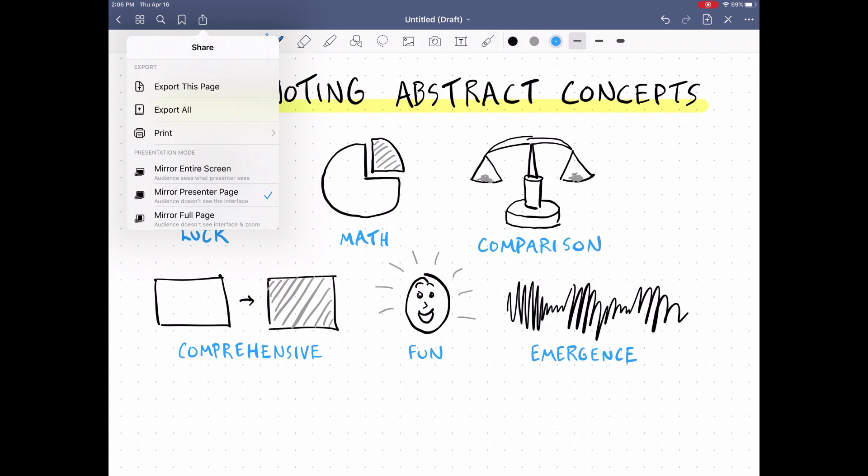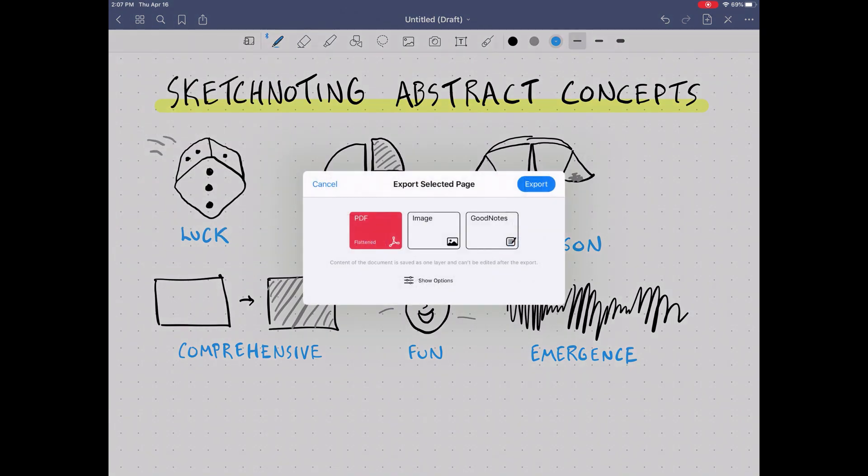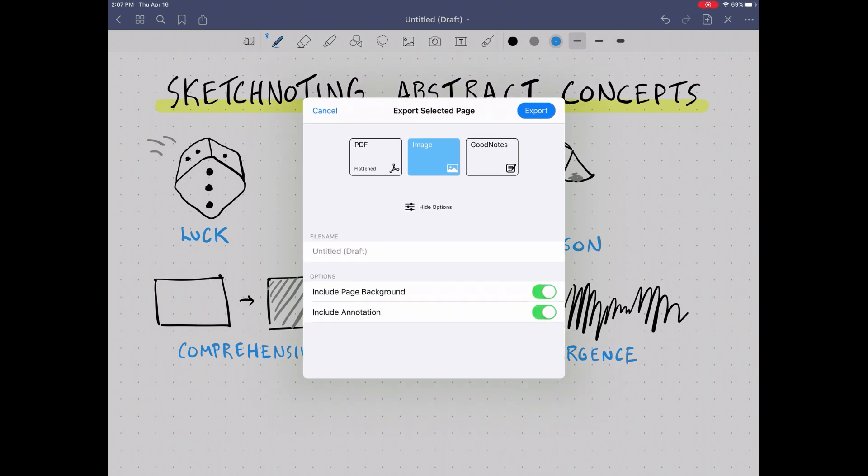The export options seem to be pretty straightforward which is nice. I like that you can include or not the page background in case you wanted to get rid of that dot grid.